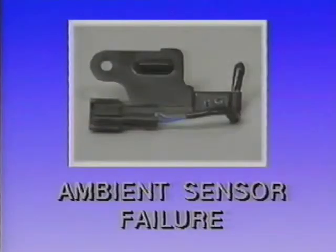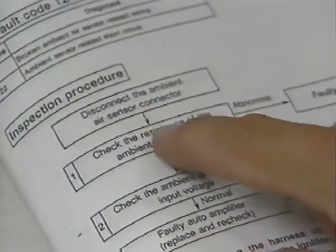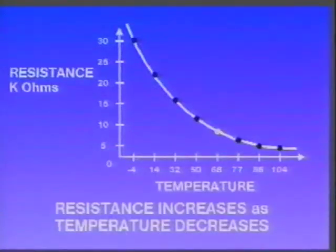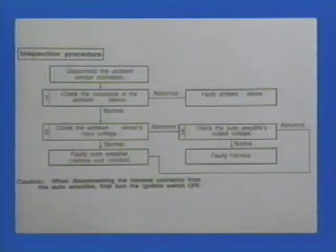To demonstrate some typical troubleshooting procedures, four examples will be presented: ambient sensor failure, two types of actuator failures, and a no cooling complaint with the compressor engaged. To troubleshoot the ambient sensor circuit, disconnect the sensor and measure the resistance across the two sensor pins. At 77 degrees Fahrenheit, the reading should be approximately 3 kilo ohms. Remember, the readings will vary according to temperature. Always consult the service manual for the specific sensor specifications. If the reading is not within specifications, the sensor is faulty and should be replaced.